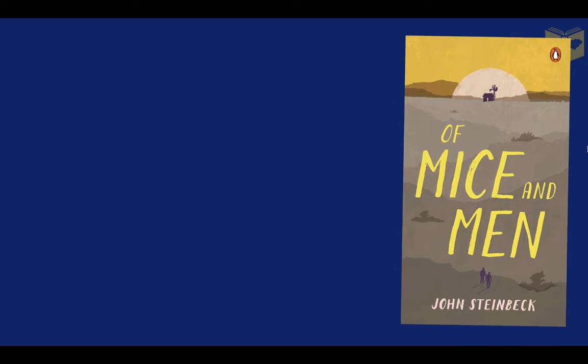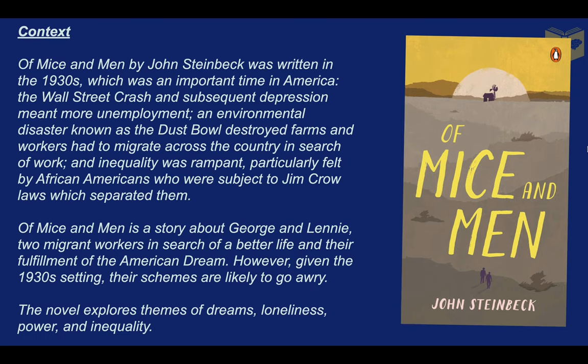Let's see an example with Of Mice and Men. For a bit of context, Of Mice and Men was written by John Steinbeck during the 1930s — an important time in America. It's after the Wall Street crash and during the subsequent economic depression, which meant high levels of unemployment. There was also an environmental disaster known as the Dust Bowl, which destroyed farms and workers had to migrate across the country in search of work. Inequality was rampant amongst classes, but also with gender and race, particularly African Americans who were subject to Jim Crow laws which separated them.